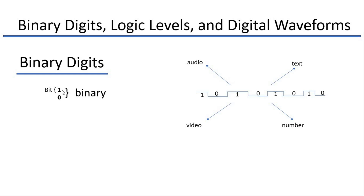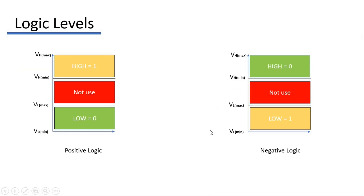In digital electronics we have only two possible states: zero and one, which can be represented by high and low voltages in digital circuits. This two-state number system is known as binary, and each digit is known as a bit. Groups of bits are used to represent digital data such as numbers, text, audio, and video.